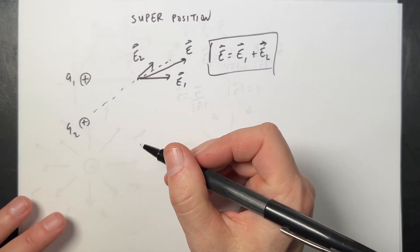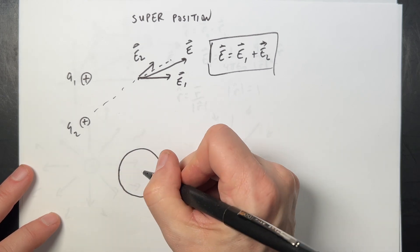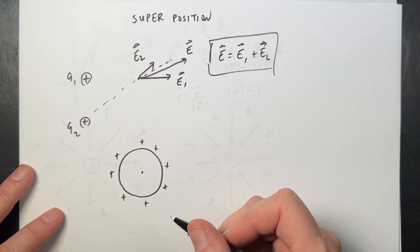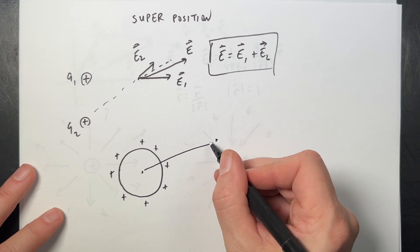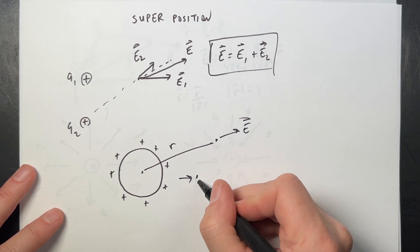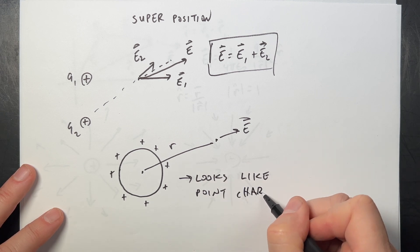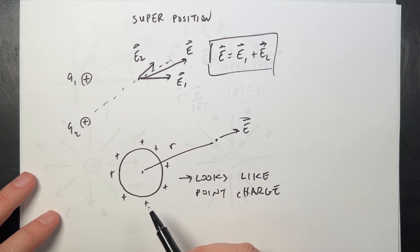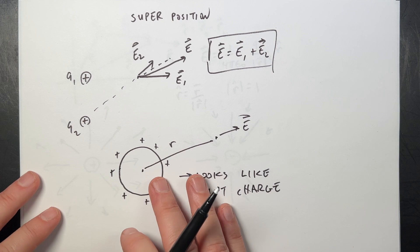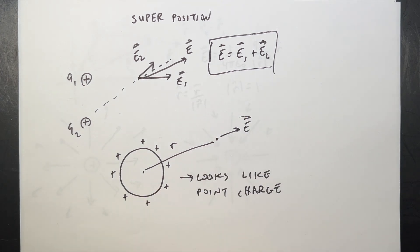There's one other practically useful result covered in the book that we'll derive later. If I have a sphere with positive charge uniformly spread over its surface, then the electric field at a point outside, at distance r, looks as if all that charge is concentrated at the center — it looks like a point charge, even though it isn't. The charge must be uniformly spherically distributed. As long as you're outside the sphere, it doesn't matter whether the charge is on the surface or distributed throughout.